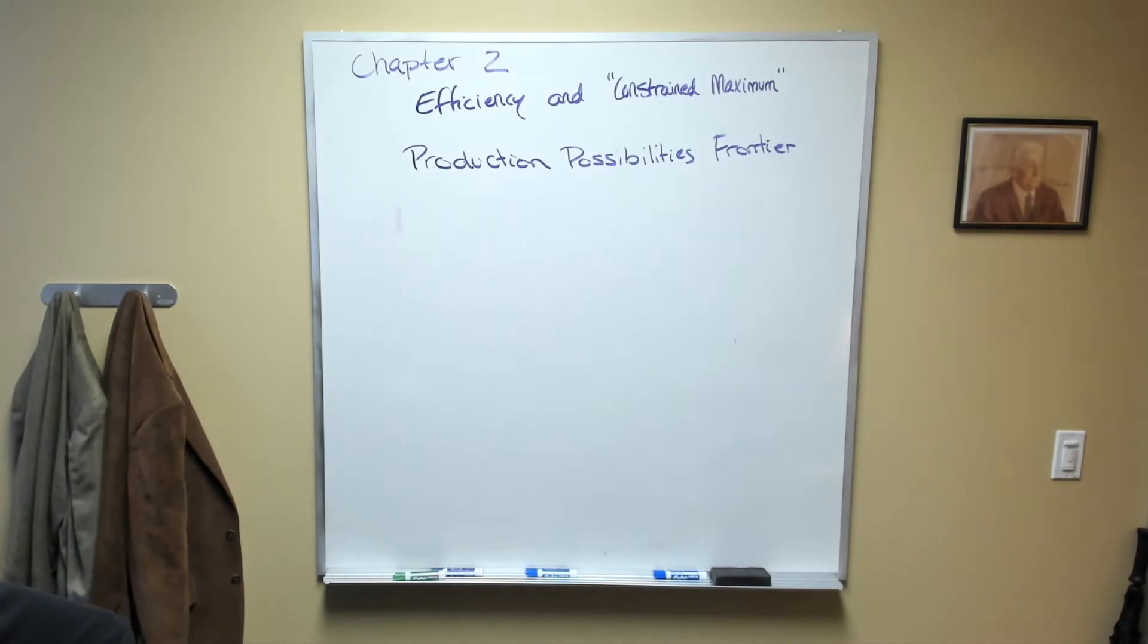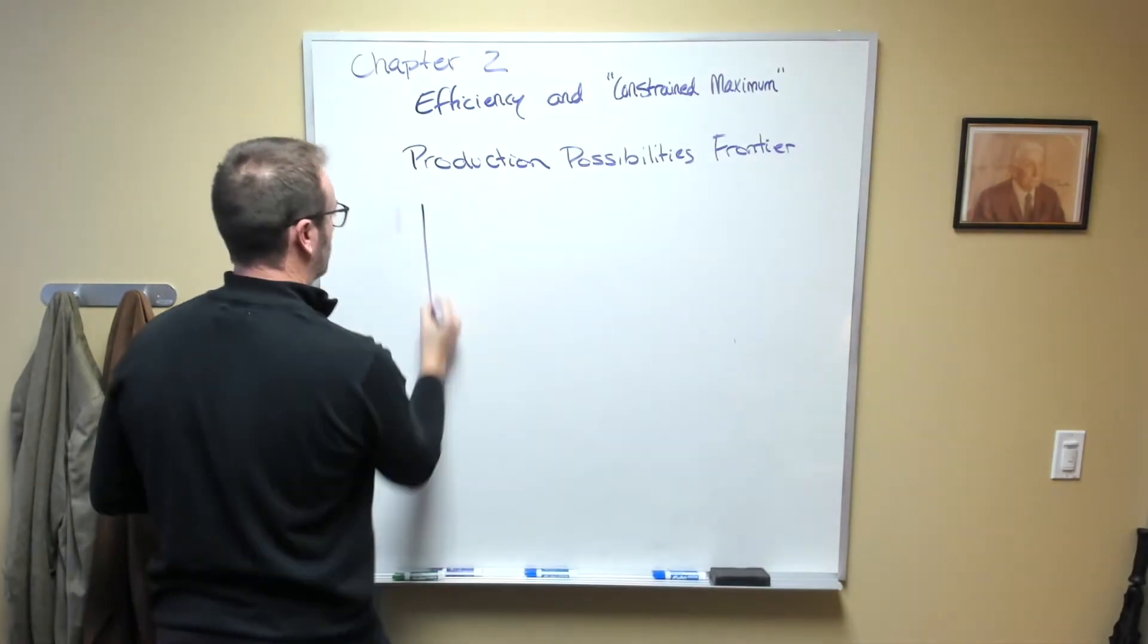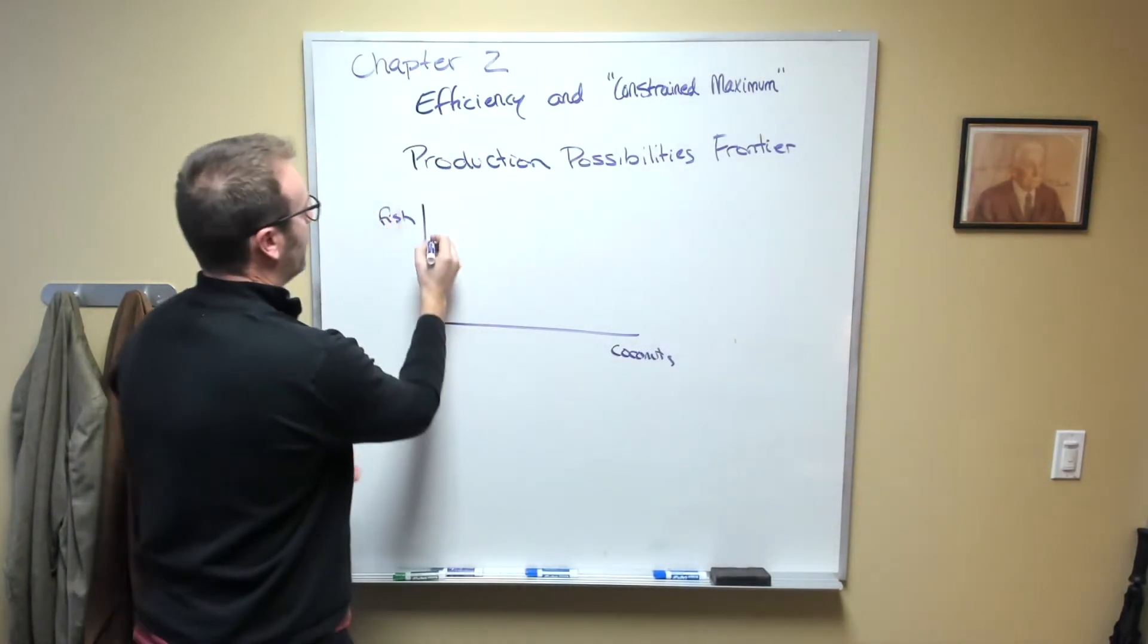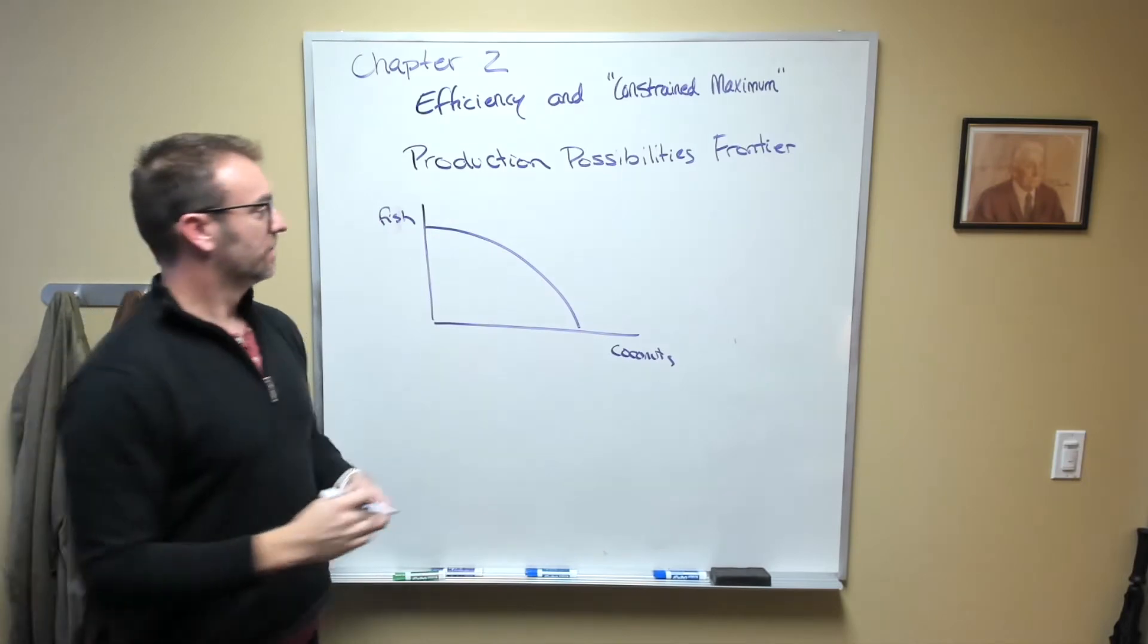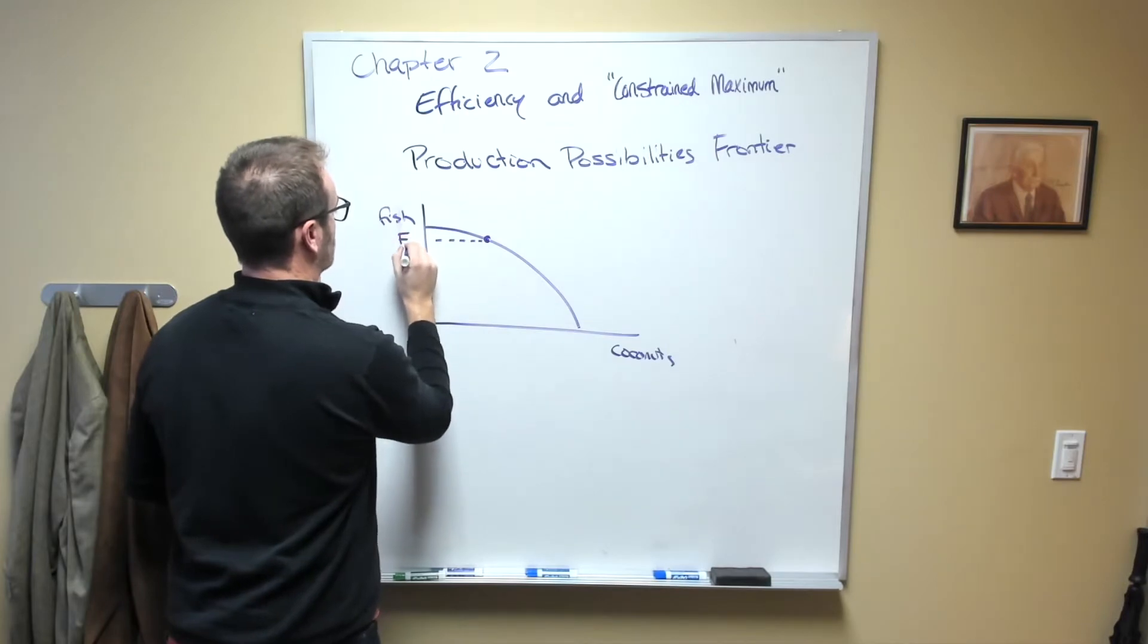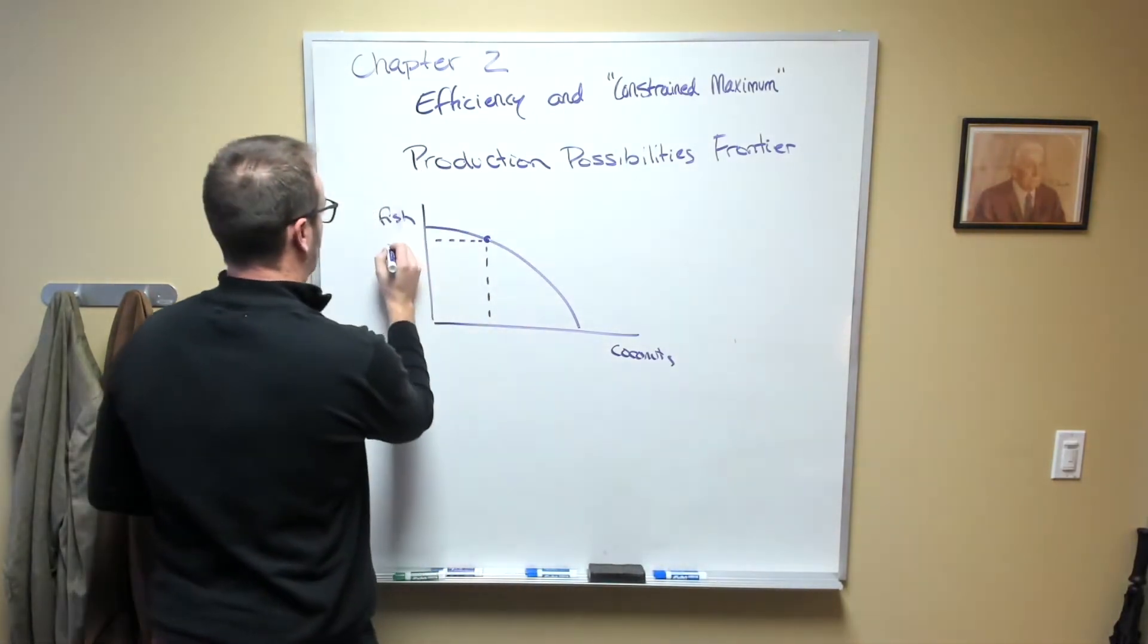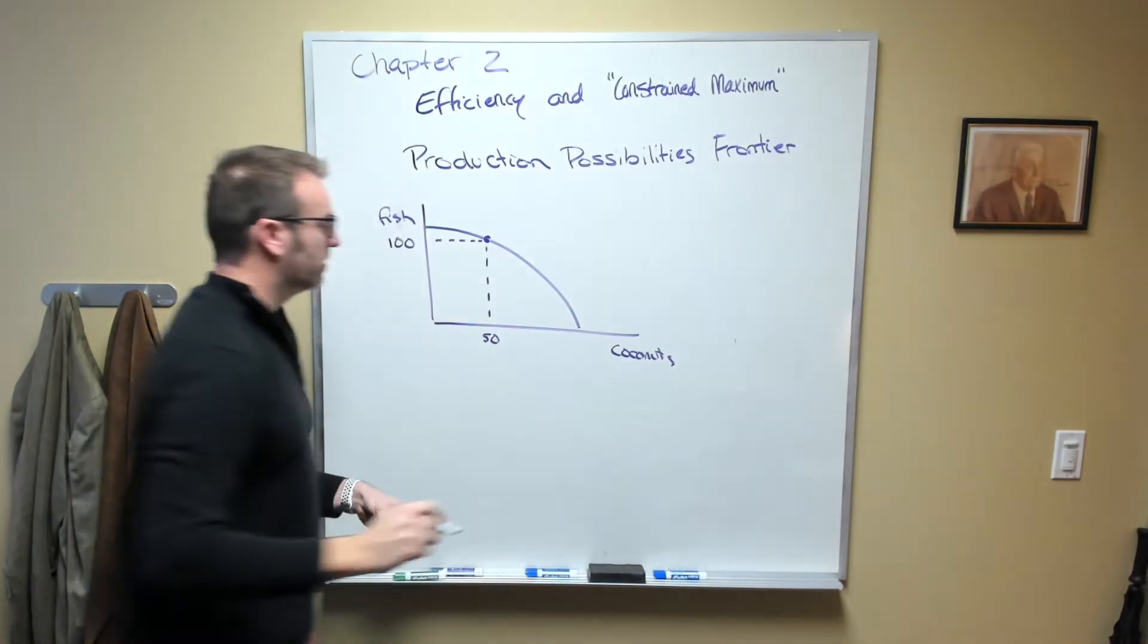What this looks like is a quick and easy and very common graph to use. We can have two goods, let's call them coconuts and fish. We have a production possibilities frontier that looks kind of like this. Let's say we're at this point here where we produced some combination of fish and some combination of coconuts. Let's just give some numbers to it - let's say we caught a hundred fish and we harvested 50 coconuts.